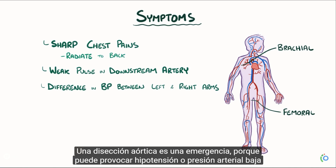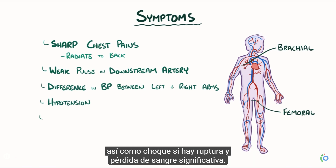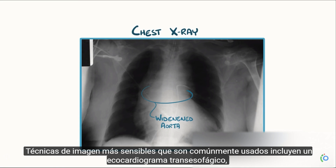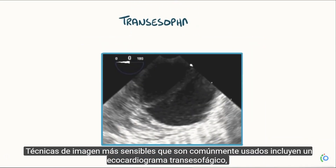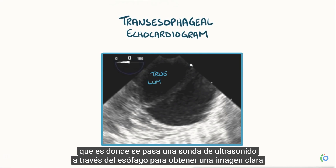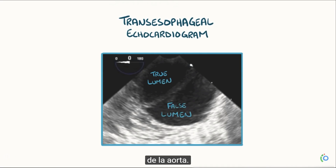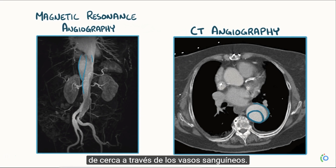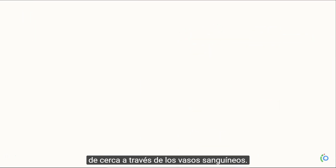Aortic dissection is an emergency because it can lead to hypotension, or low blood pressure, as well as shock if there's rupture and significant blood loss. On a chest X-ray, there's typically a widened aorta. More sensitive imaging techniques commonly used include a trans-esophageal echocardiogram, where an ultrasound probe is passed through the esophagus to get a clear picture of the aorta.